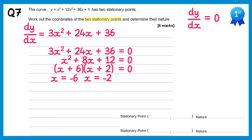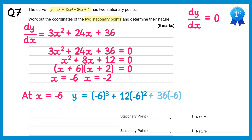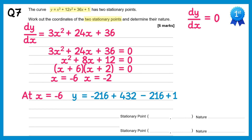We also need the y coordinates, substituting the x values back into the equation of the curve. At x equals negative 6: y = (−6)³ + 12(−6)² + 36(−6) + 1 = −216 + 432 − 216 + 1. The first three terms cancel to give 0, so y equals 1. The first stationary point is (−6, 1).